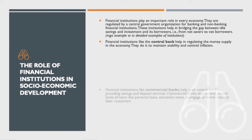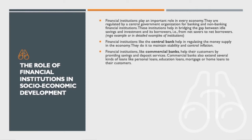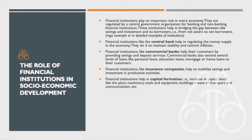The central bank acts to maintain stability and control inflation. Financial institutions like commercial banks help their customers by providing savings and deposit services. Commercial banks also extend several kinds of loans such as personal loans, education loans, and mortgage or home loans. Financial institutions like insurance companies help to mobilize savings and investments in productive activities. Financial institutions also help in capital formation — increase in capital stock like plant, machinery, tools, equipment, buildings, and means of transport and communication.